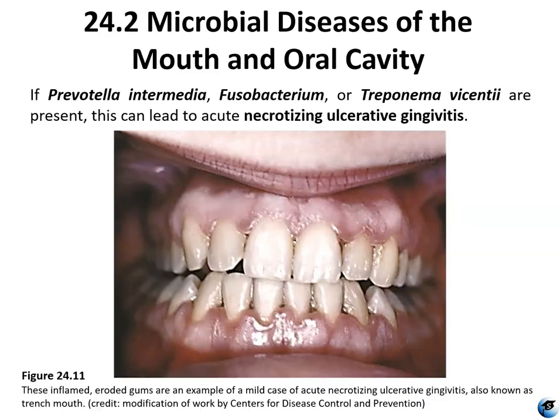Figure 24.11 shows a case of acute necrotizing ulcerative gingivitis, commonly known as trench mouth. This is a mild case showing inflammation of the gums, receding gum line, and teeth that are no longer firmly anchored into the jaw.